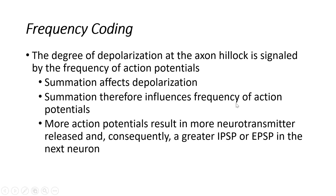This is how the nervous system codes different types of signals by manipulating the frequency of action potentials. If we think about summation, it affects the depolarization. We can add different stimuli if they're coming in close enough in time or close enough in space on the soma. So summation influences frequency coding — if I'm receiving multiple stimuli on the soma, I can add those together and more likely reach threshold more frequently, allowing me to fire action potentials more frequently.